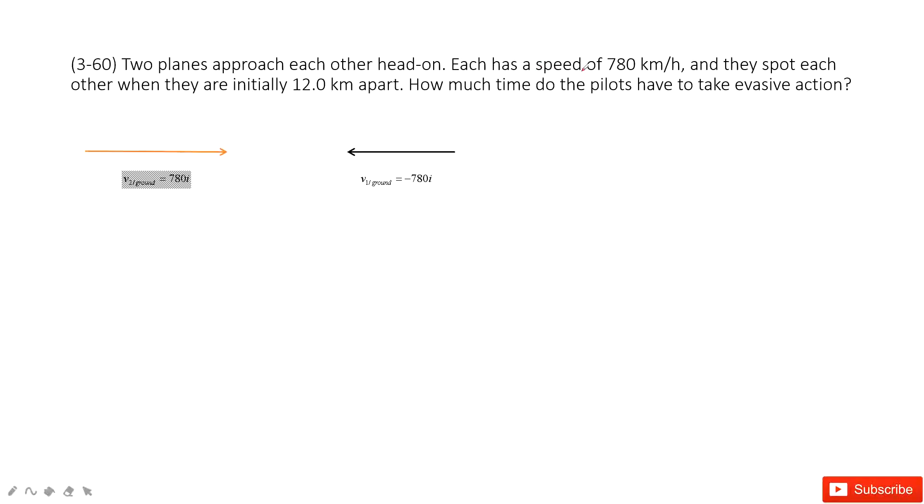You can see we have two airplanes. Each one has a speed of 780 km per hour and their velocity is just opposite. One is positive, one is negative. Initially they are 12 km apart. We need to find the time taken for them to meet each other.